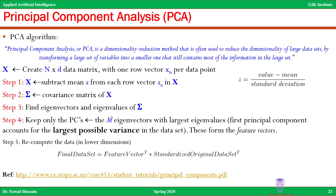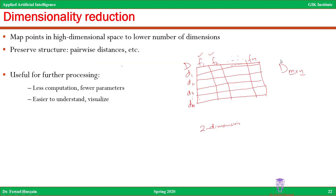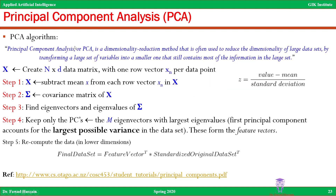Let's look at the first of the two algorithms we will be discussing. The first one is Principal Component Analysis, or PCA — maybe some of you have done it in image processing. PCA is a dimensionality reduction method that is often used to reduce the dimensionality of large data sets by transforming a large number of variables into a smaller set that still contains most of the information, preserving as much structure as possible.